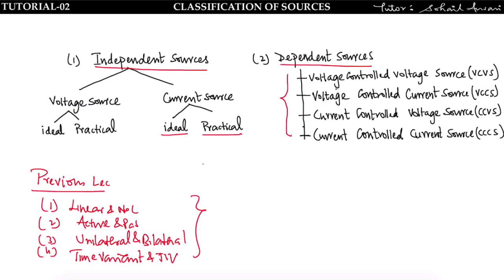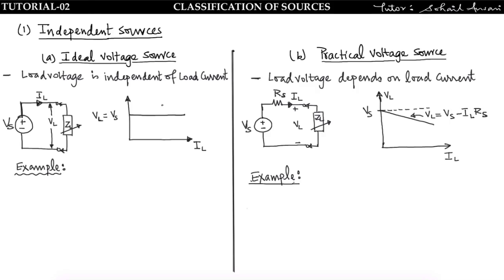There are four types of dependent sources: voltage controlled voltage source, voltage controlled current source, current controlled voltage source, and current controlled current source. We will discuss all these things in this tutorial. Let us first talk about independent sources.